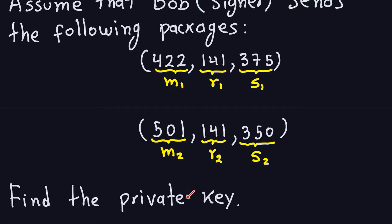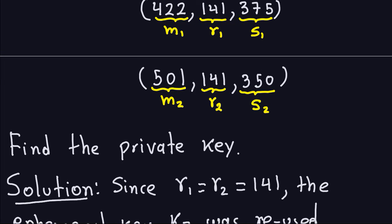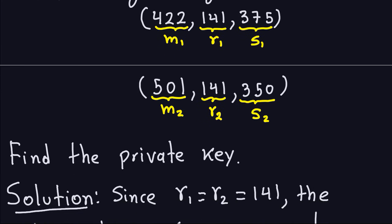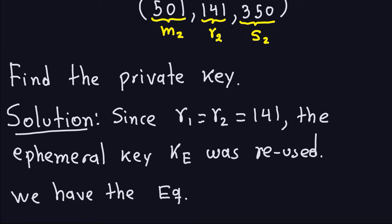What we want to do is we want to find the private key. We're not going to use discrete logs here. The reason for this is you don't need to do discrete logs if you reuse the ephemeral key. Now, if you notice here in these two messages, R1 is equal to R2. And from what we discussed in the previous video, what that means is that will tell the attacker that the person who is sending the messages is using the same ephemeral key. So, since R1 is equal to R2, the ephemeral key was reused.